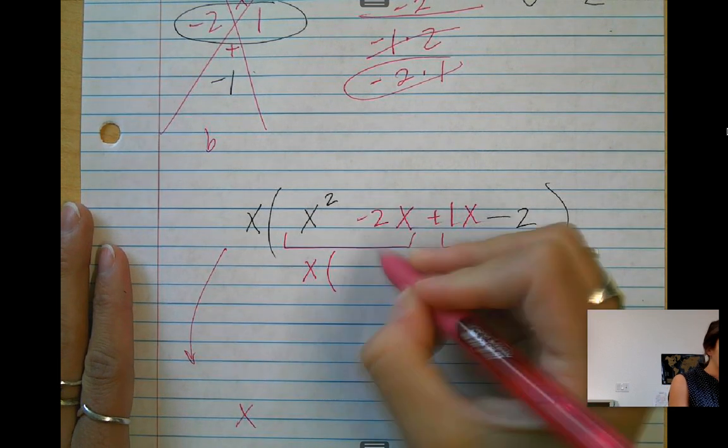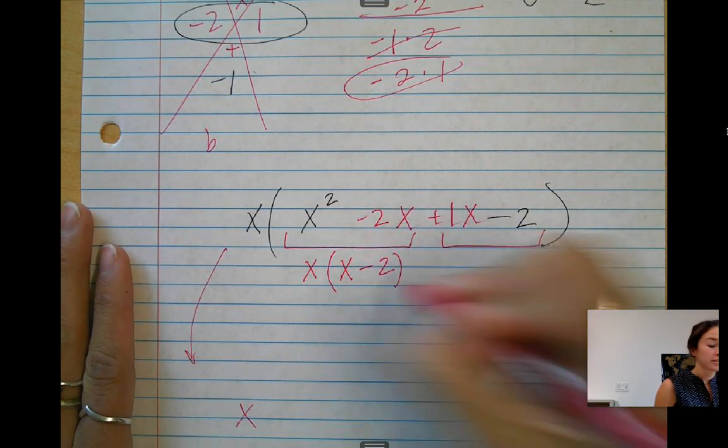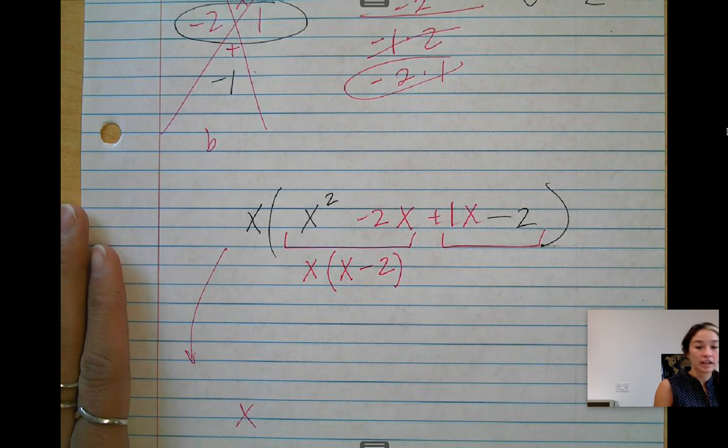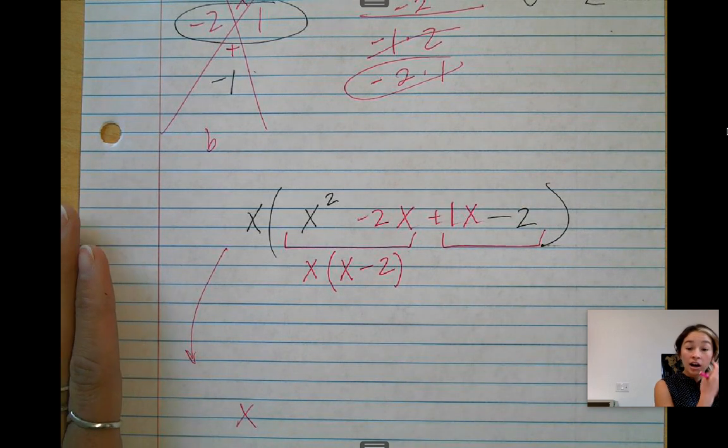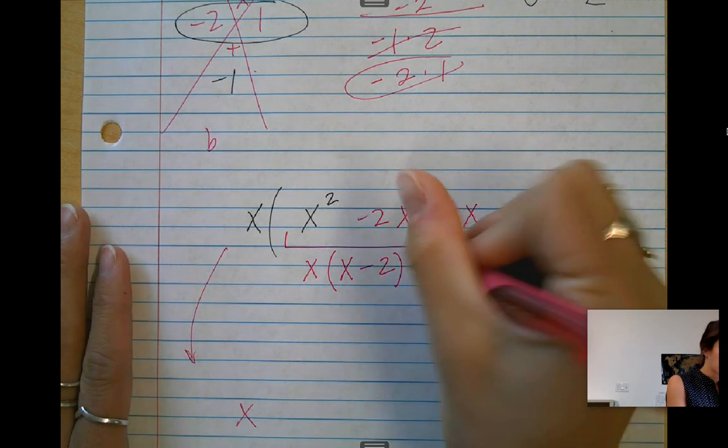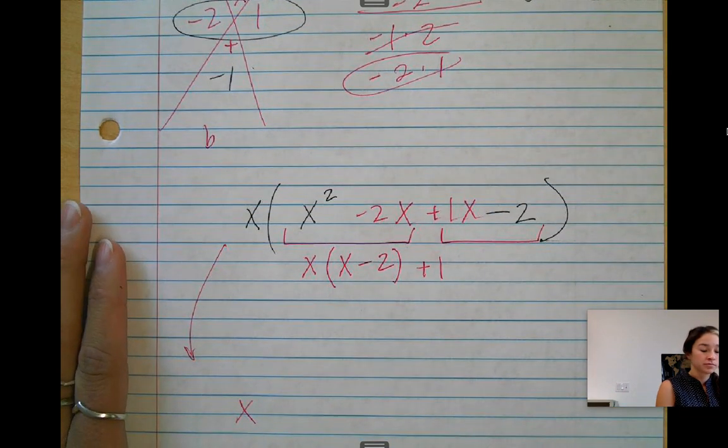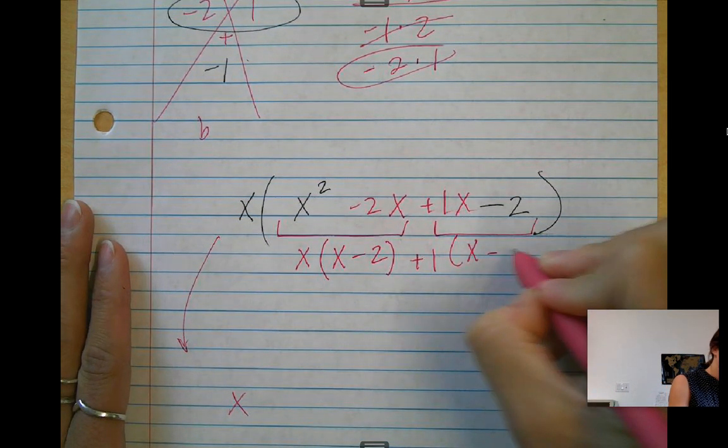Then I have x minus 2 left. My GCF of the second two terms, just be a positive 1. Then I have x minus 2 left.